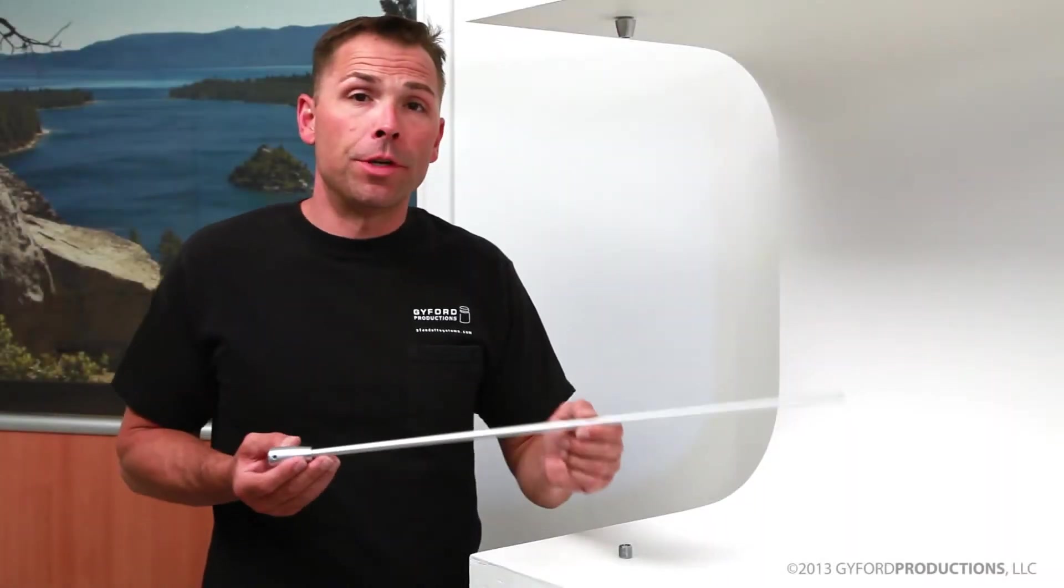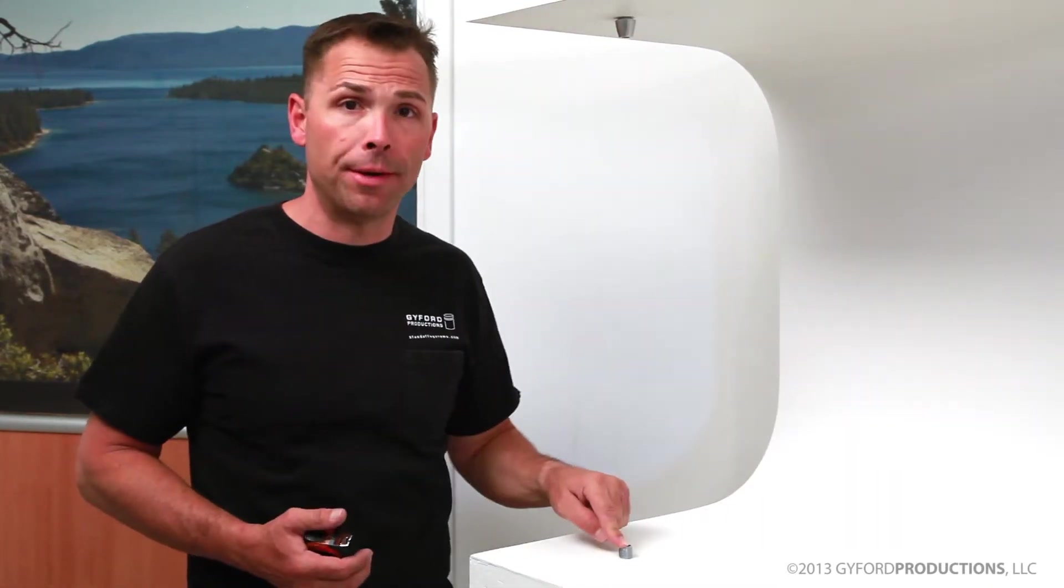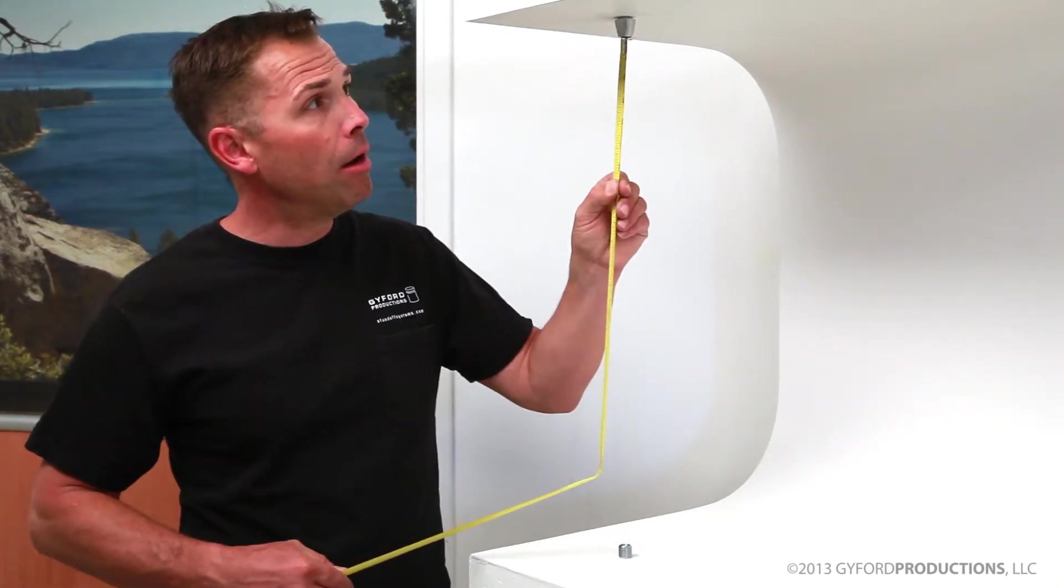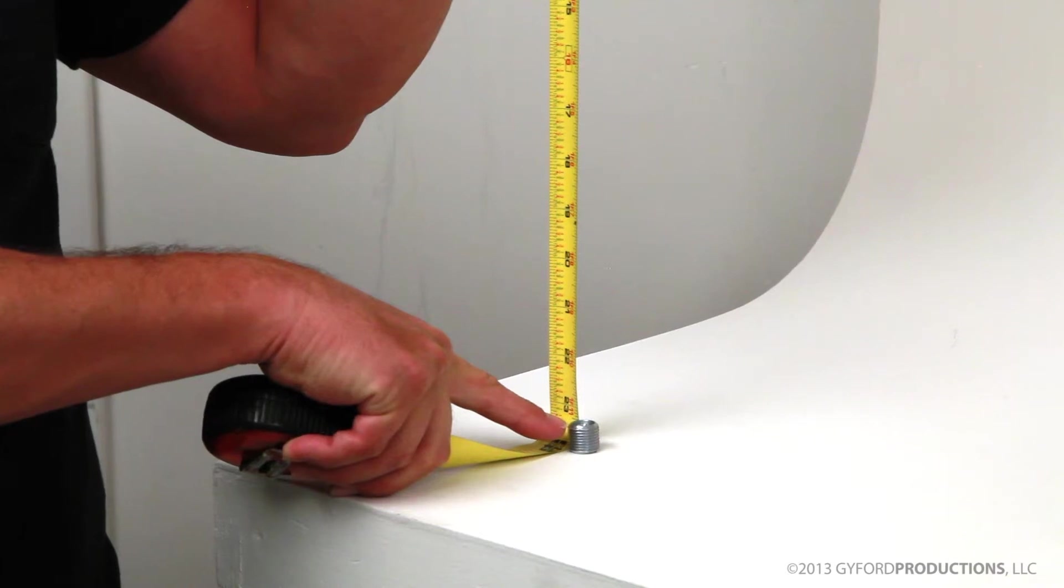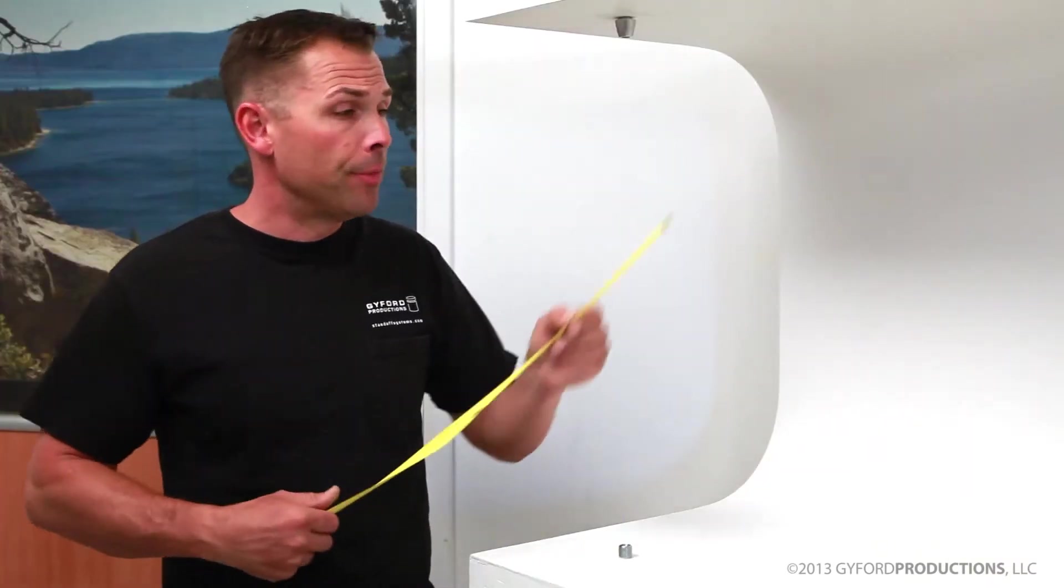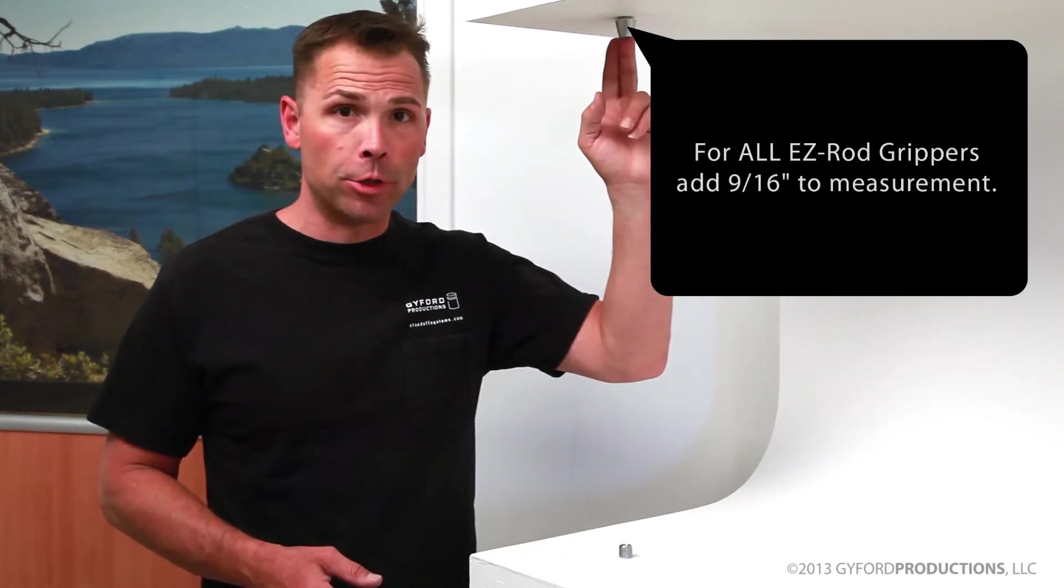So as for determining your rod cut length, the easiest way is to install your top and bottom mounts as we've done here, and then measure from the face of one down to the other. Then we'll do our take-offs. So here we've got a rod gripper at the top. These have a hole in them, so we need to add to them. So for both the 3/8 and the 1/4 inch rod, we'll go ahead and add 9/16 of an inch to your measurement.